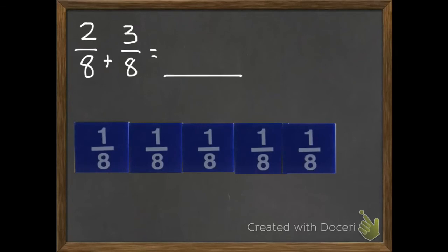Remember, we just add the numerator. We don't add the denominators. The denominator will stay the same. We want to know how many eighths we have. So eighths is going to stay.